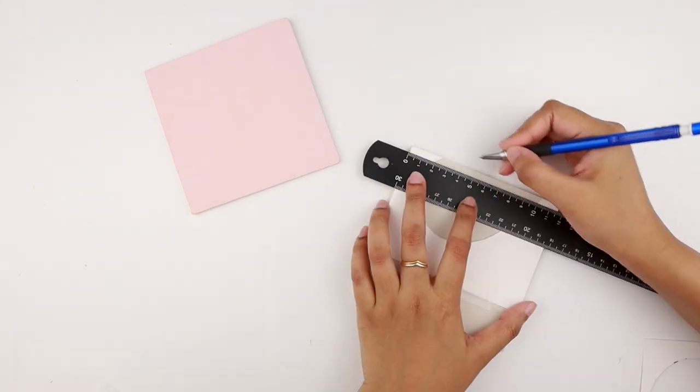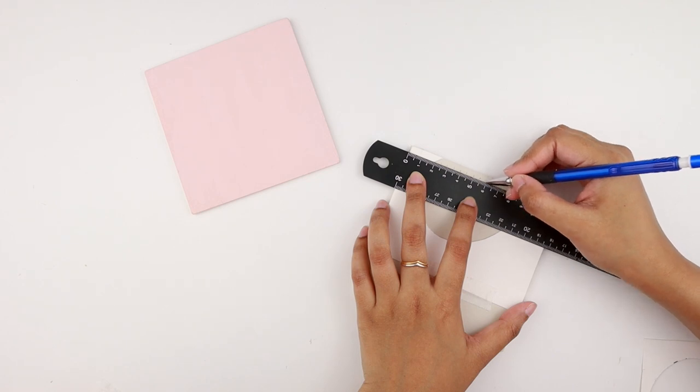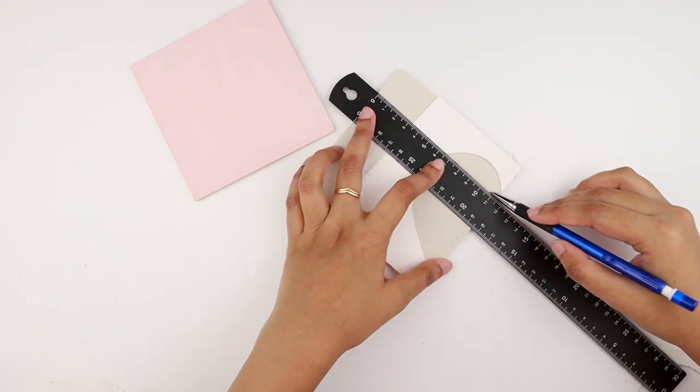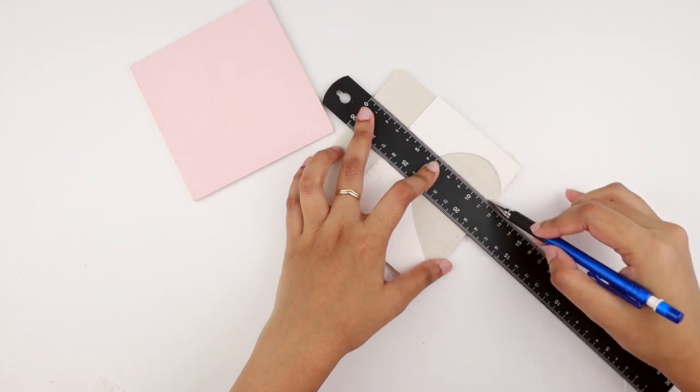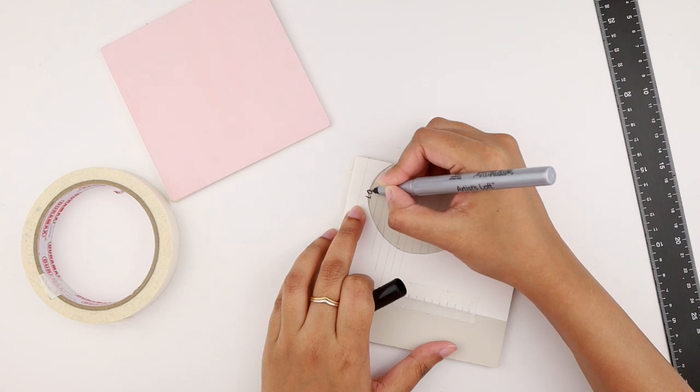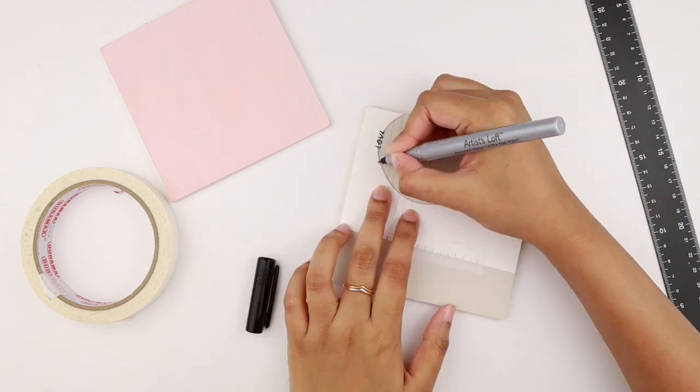I took a ruler and marked half centimeter points on both the opposite sides. I connected the markings to make a guide for handwriting. Then I used a fine point permanent marker to write the word love over and over again until the entire shape was filled.